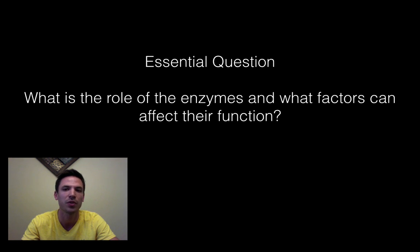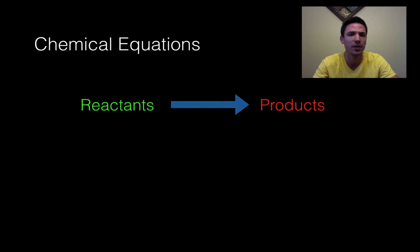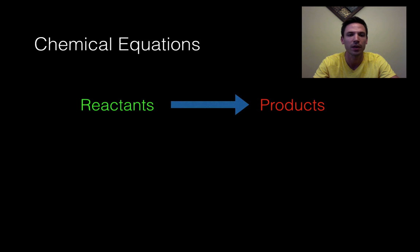By the end of this video, you should have an understanding of what sorts of things make enzymes work better or in most cases worse. Before we can really understand how enzymes work and their role, we have to have just a basic understanding about chemical equations. With a chemical equation, we have two things: what we start with — our reactants — and what we end with — our products.